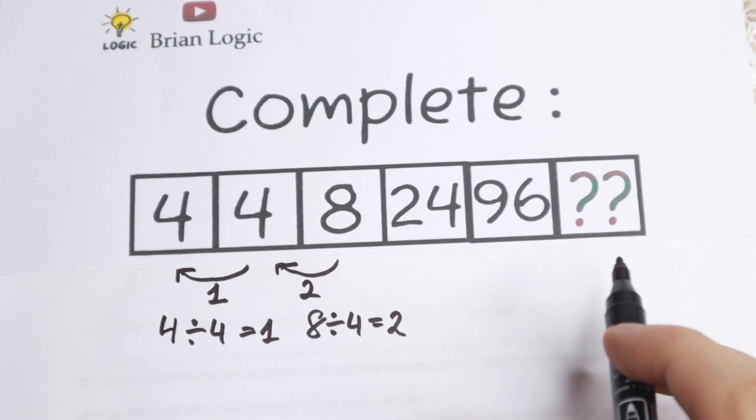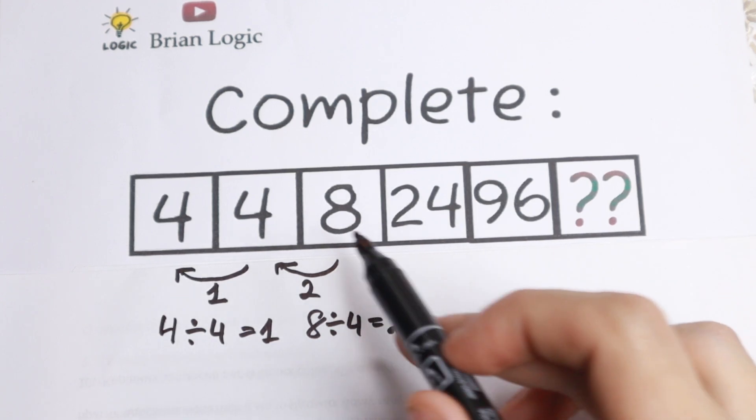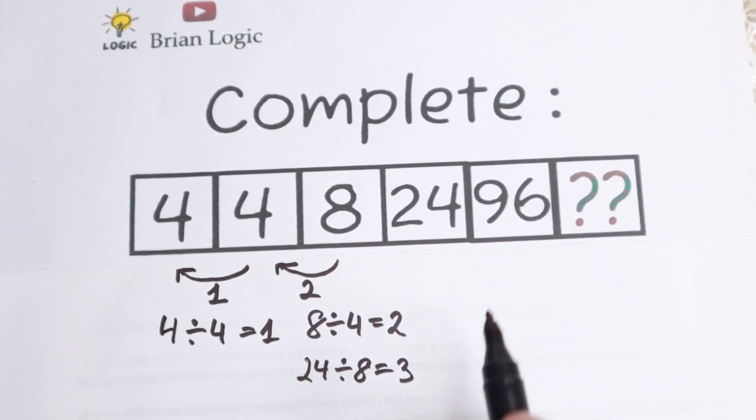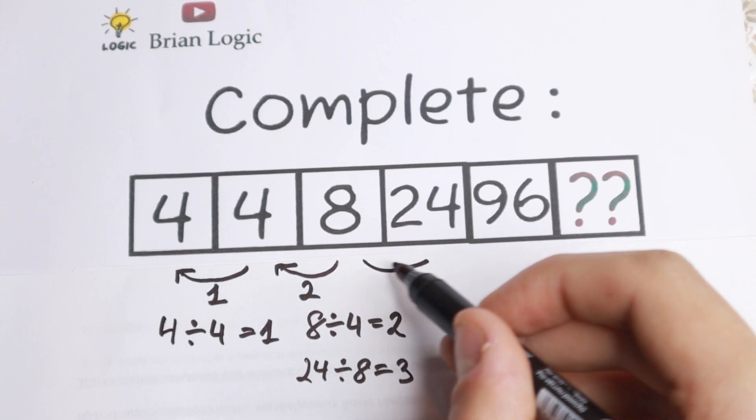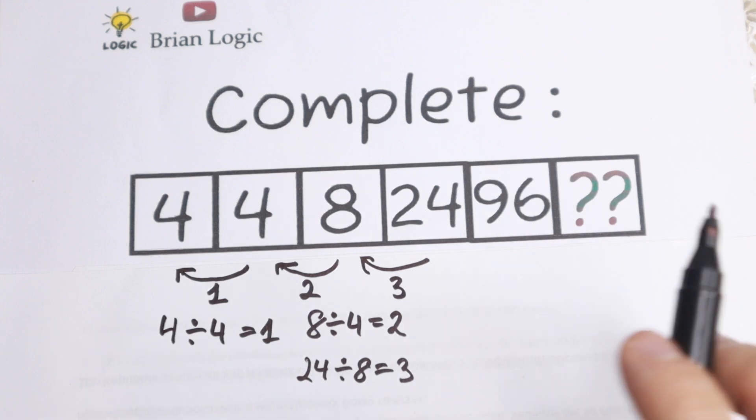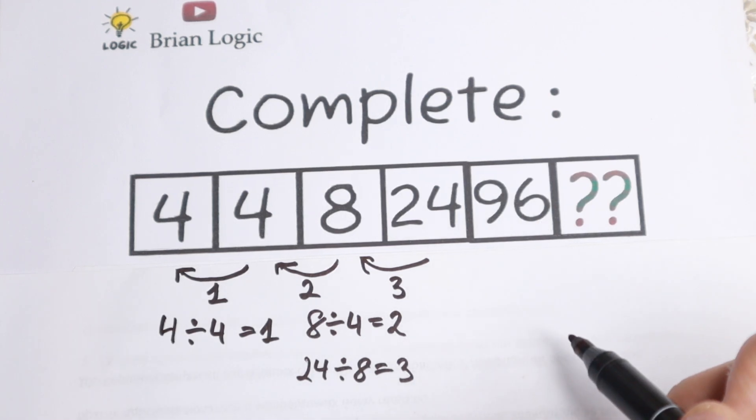And let's do one more step. Let's divide this twenty-four by this eight. So if we divide twenty-four by eight, we will have three. So as you can see right now, we have a really good order of natural numbers: one, two, three. And let's check the same logic in the last step.